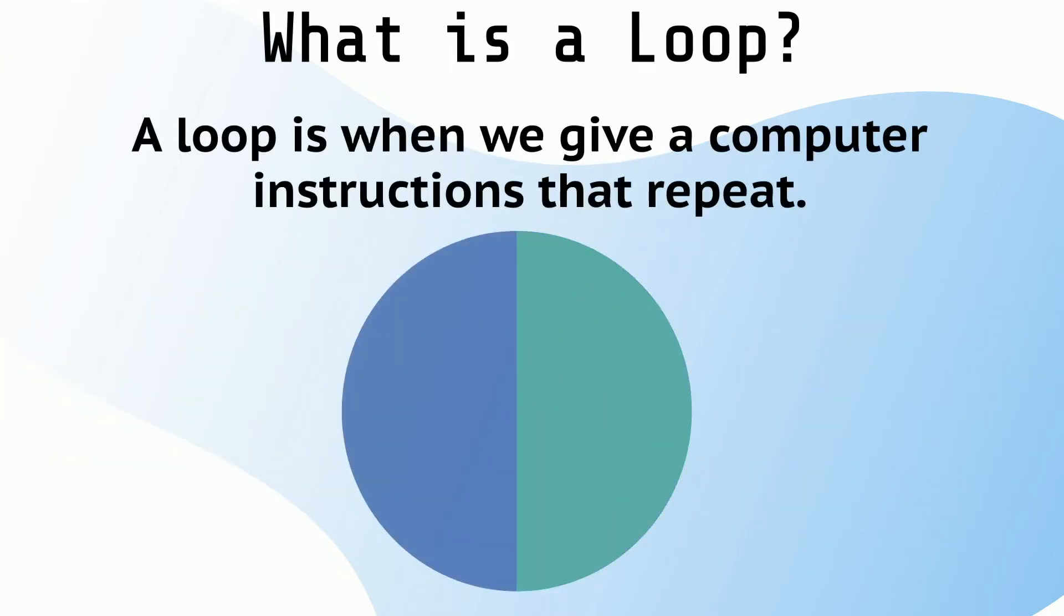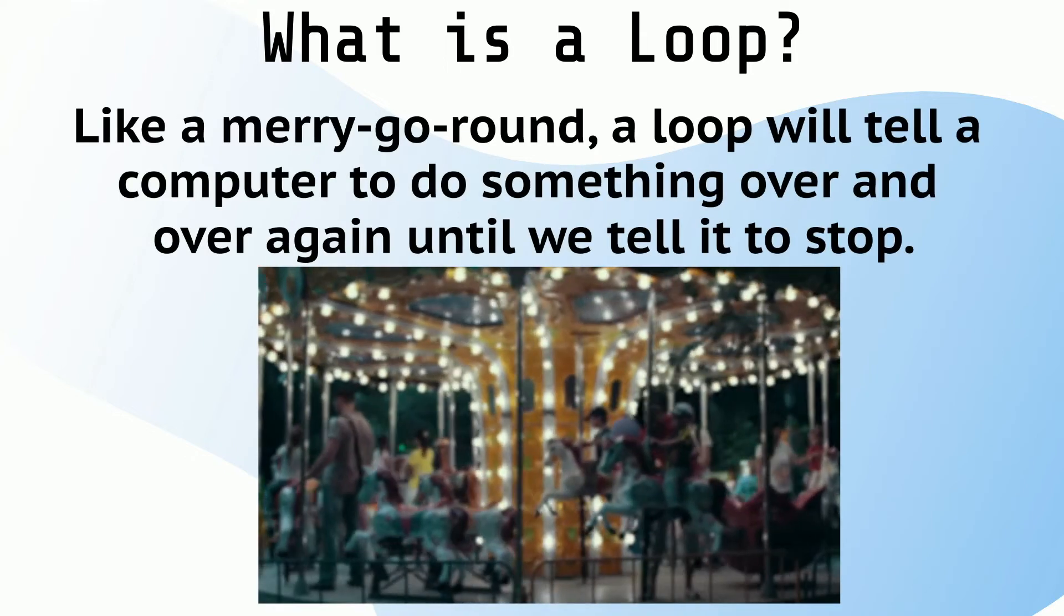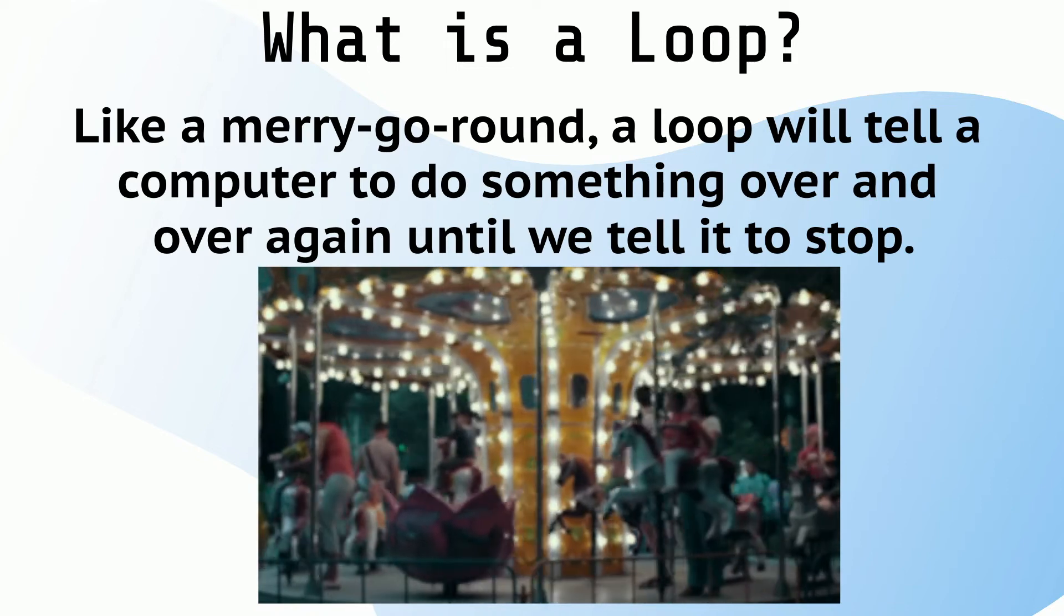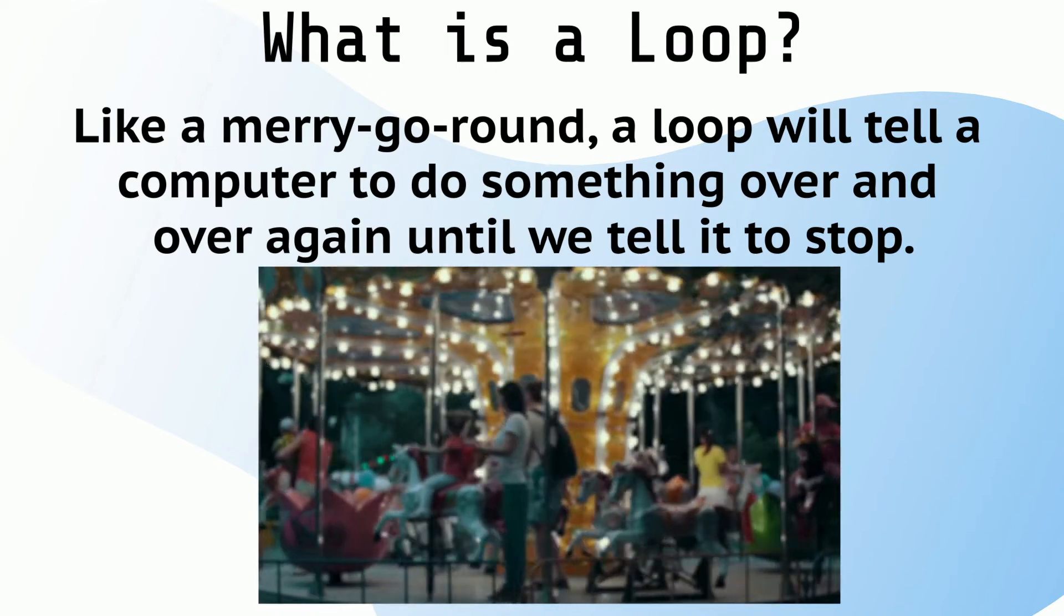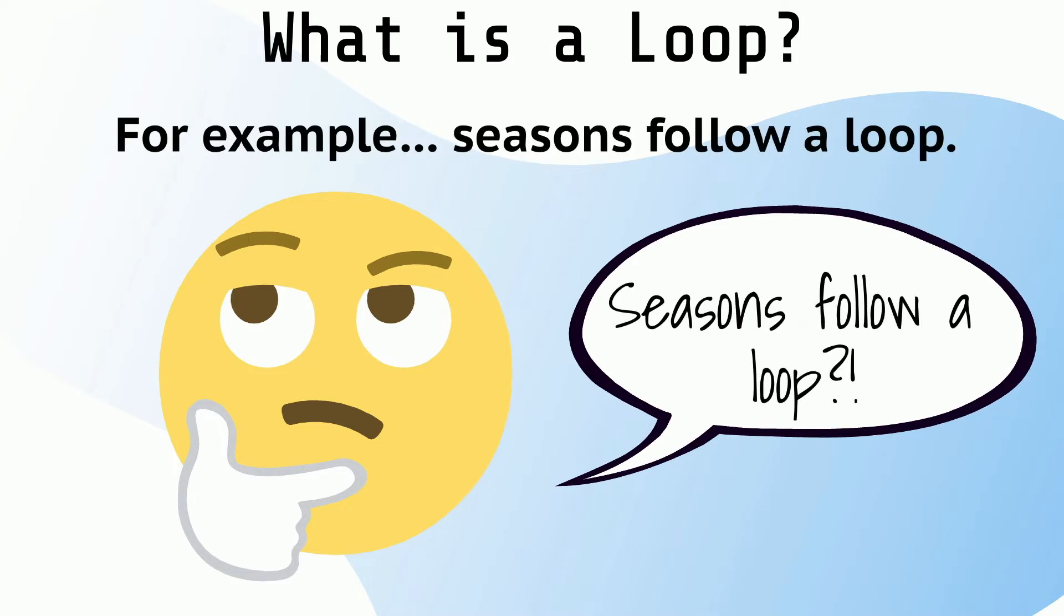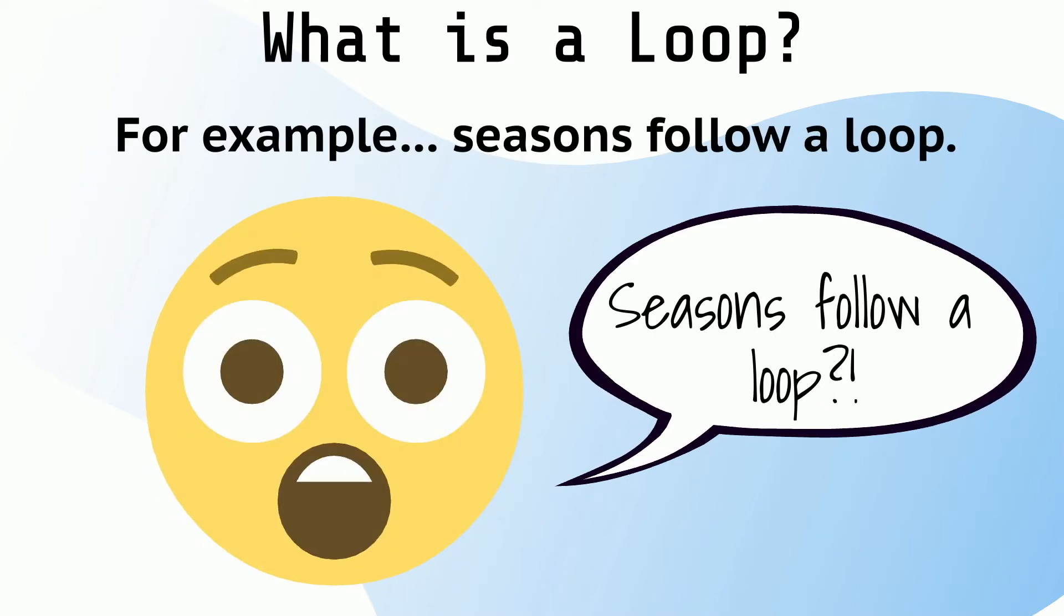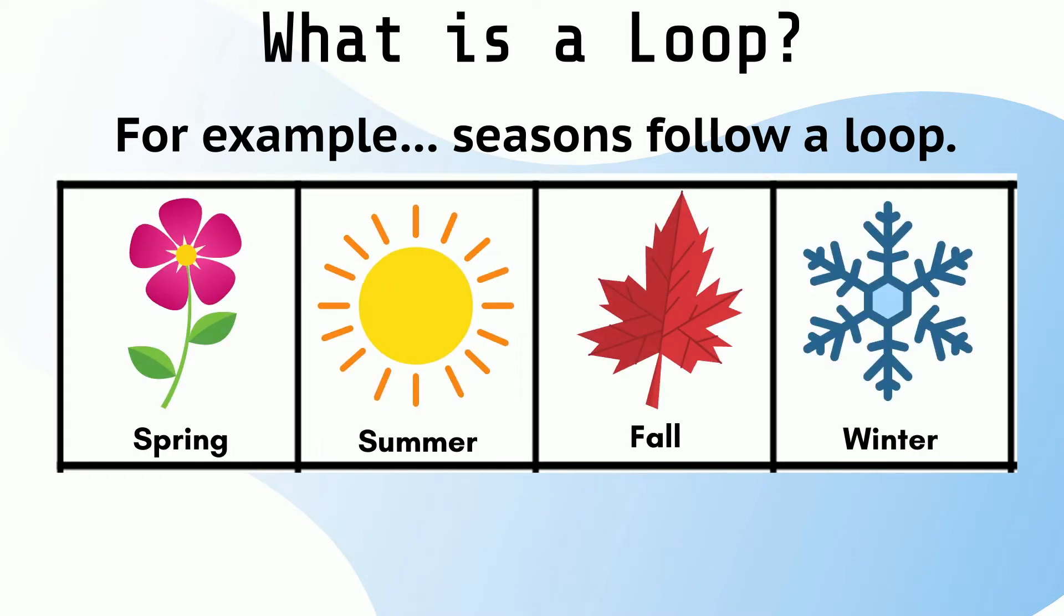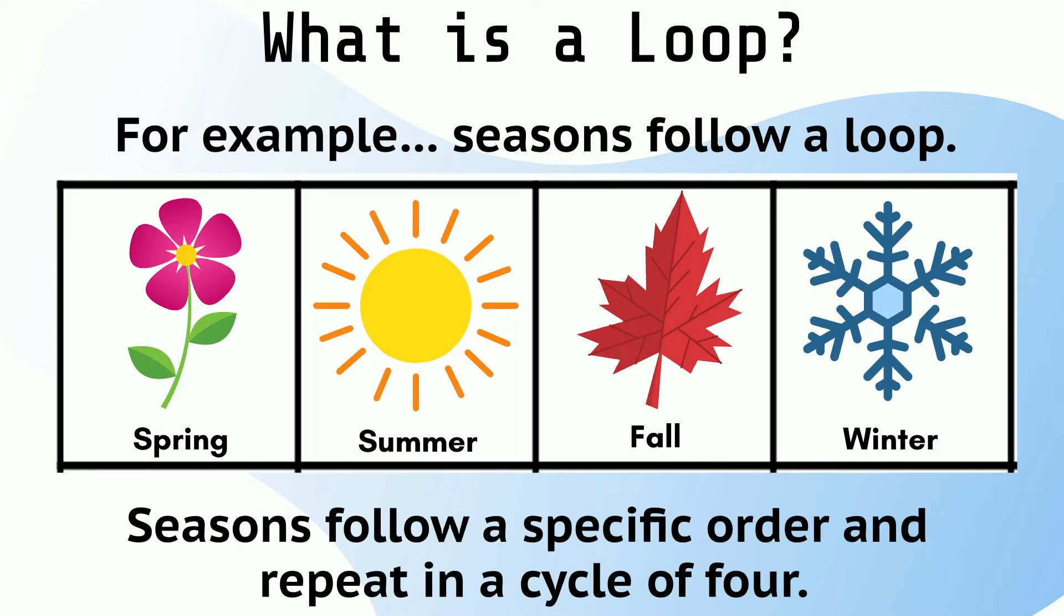A loop is when we give a computer instructions that repeat. Like a merry-go-round, a loop will tell a computer to do something over and over again until we tell it to stop. There are loops everywhere. For example, seasons follow a loop. We have spring, summer, fall, and winter. Seasons follow a specific order and repeat in a cycle of four.